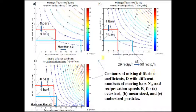This is the contours of mixing diffusion coefficient: A is oversized particle, B is mean-sized particle, C is for undersized particle.